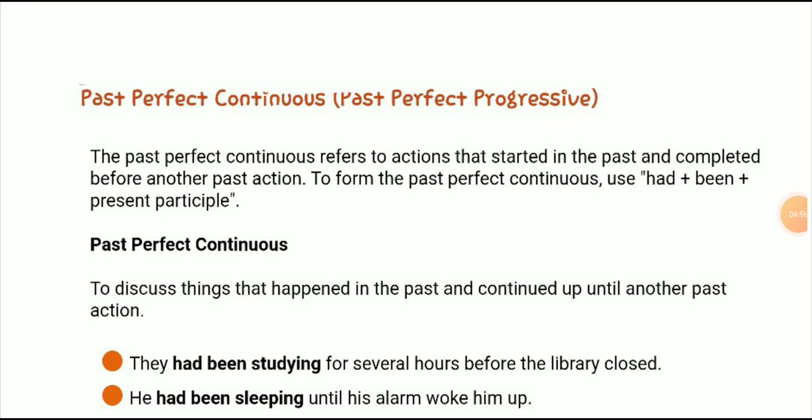The past perfect continuous is used to discuss things that happened in the past and continued up until another past action. Example number one: 'They had been studying for several hours before the library closed.' We use the subject at the start, then 'had been', then verb plus '-ing', then the time reference, then the remaining part of the sentence.